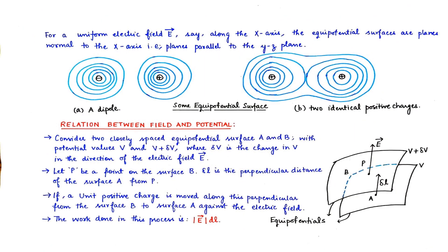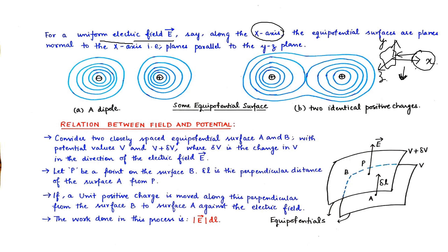For a uniform electric field E along the x-axis, the equipotential surfaces are planes normal to the x-axis — that is planes parallel to the y-z plane. Anything parallel to the y-z plane and having nothing to do with the x-axis: these field lines are placed in such a manner because we aim to make the fields perpendicular to the voltage, considering the tangential field which gives the direction.